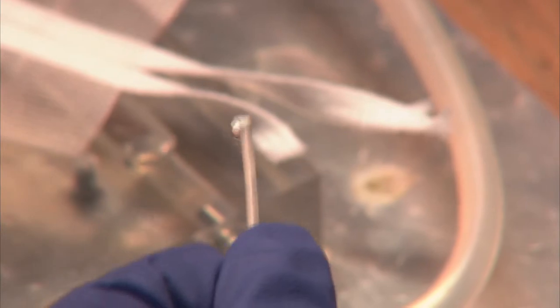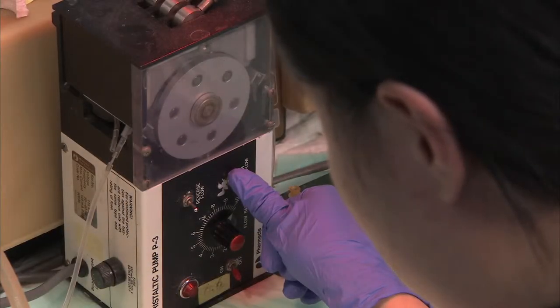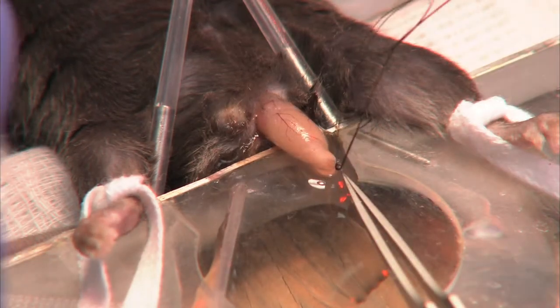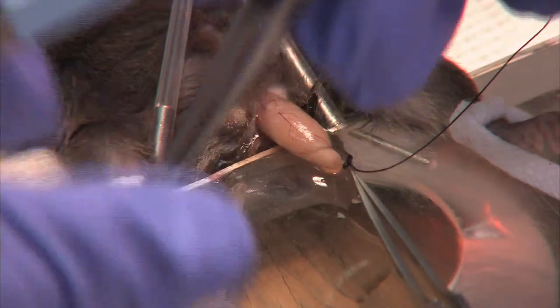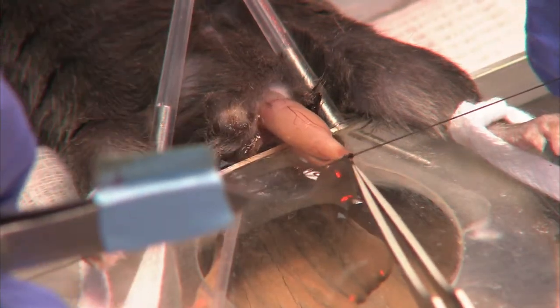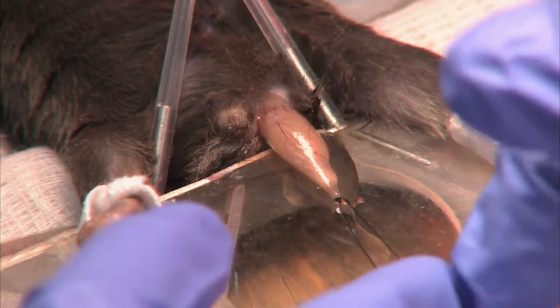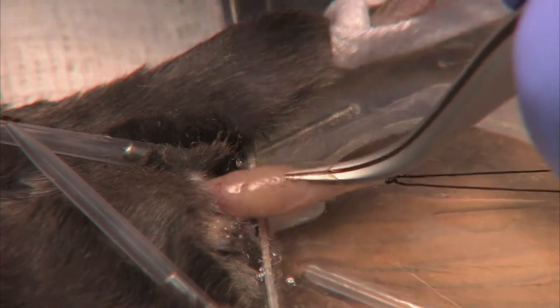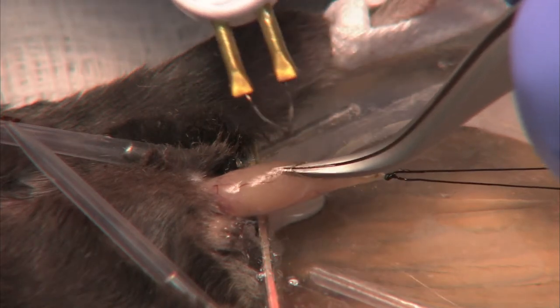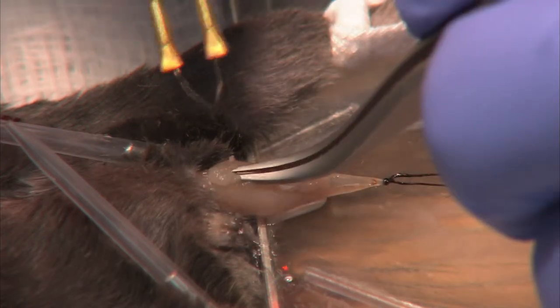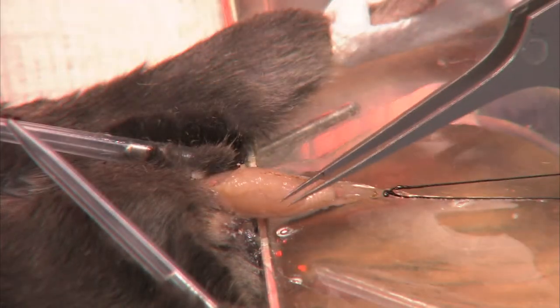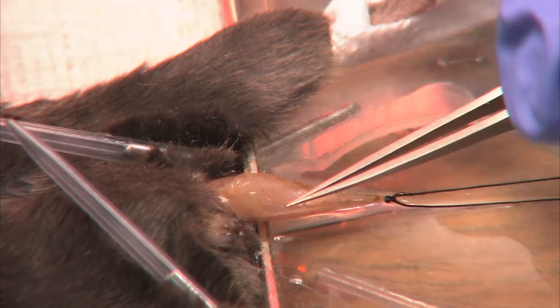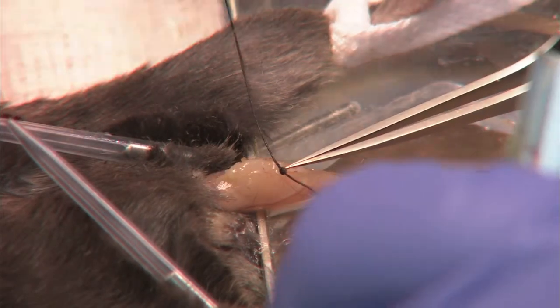Superfuse the cremaster muscle with 37 degrees Celsius warmed bicarbonate buffered saline. Tie a 4.0 suture in the distal end of the cremaster muscle to hold it down on the clear viewing glass pedestal of the cremaster muscle board. Cauterize the cremaster muscle longitudinally with a cautery. With a 4.0 suture, hold the muscle flat and secure it along the edges on the pedestal.